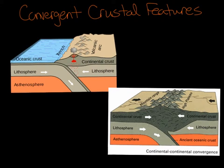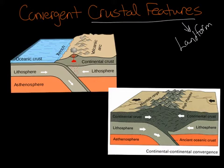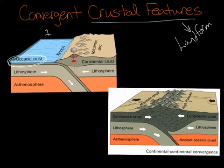So let's look at convergent crustal features — which is just another way of saying landforms. A convergent boundary makes three different things. Looking at the first picture, we have part of the ocean converging with part of the continent — so oceanic crust and continental crust come together.